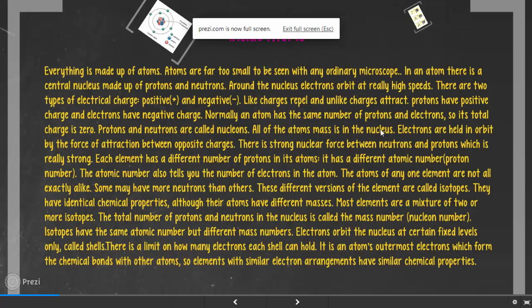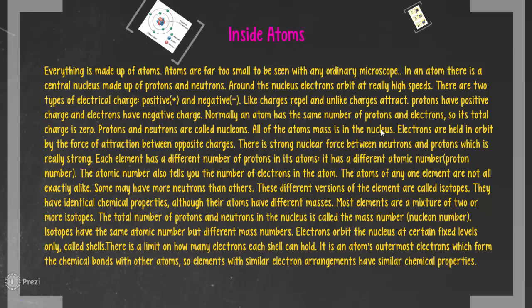All the mass of the atom is in the nucleus because that's where the neutrons are. Electrons are held in orbit by the force of attraction between opposite charges. There is a strong nuclear force between neutrons and protons which is really strong. Each element has a different number of protons — a different atomic number. You can also determine the number of electrons from the atomic number because the number of electrons equals the number of protons.